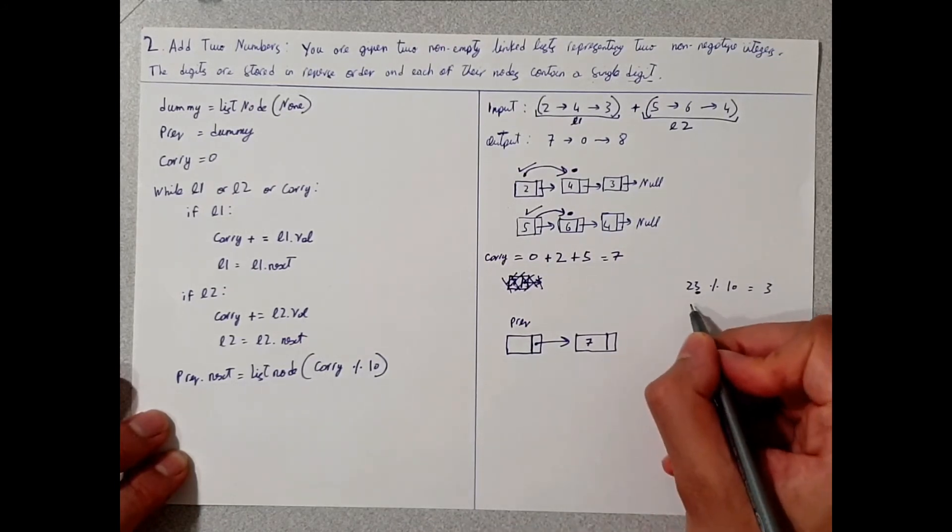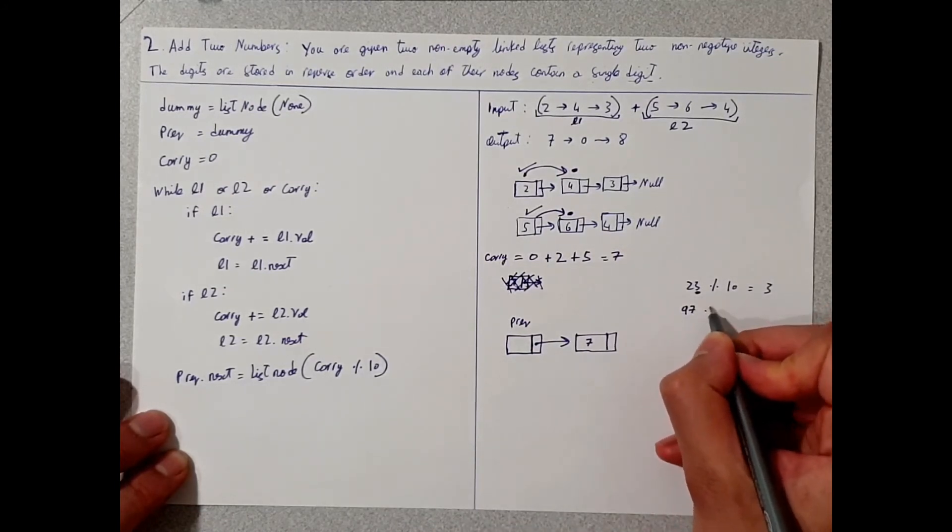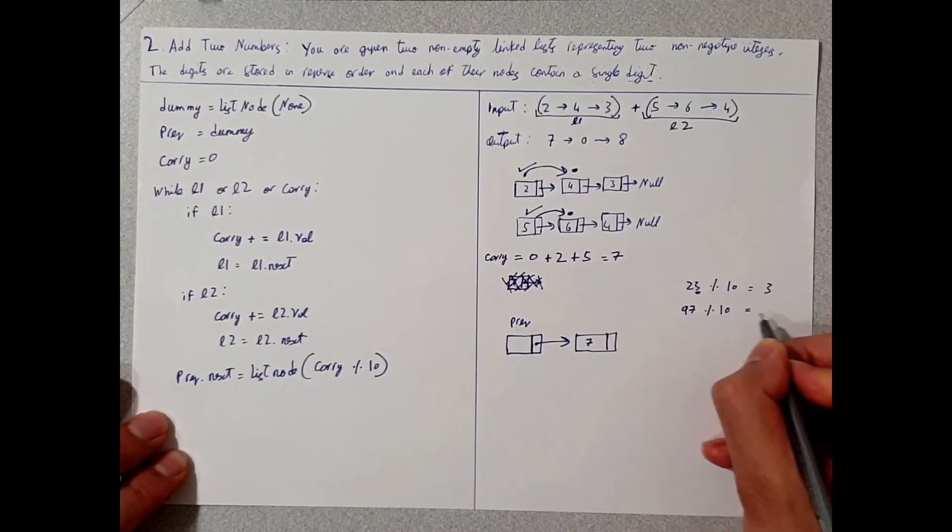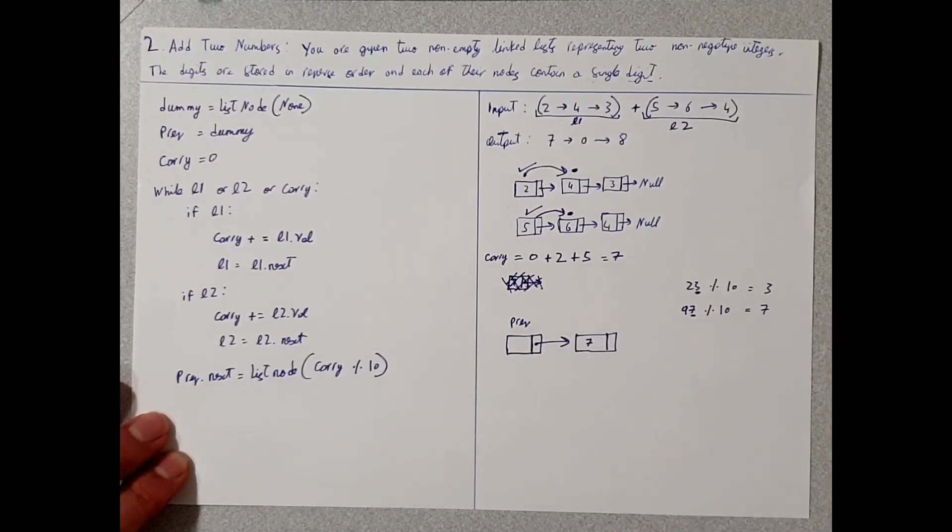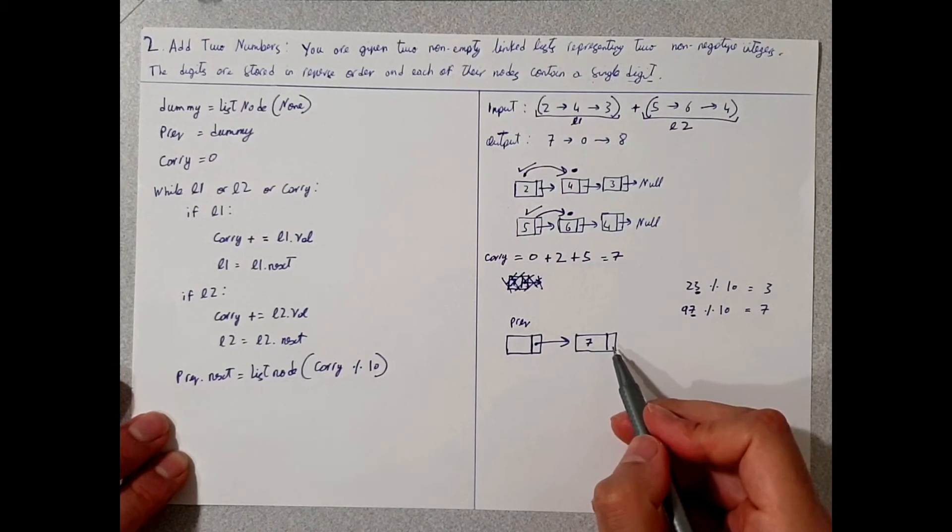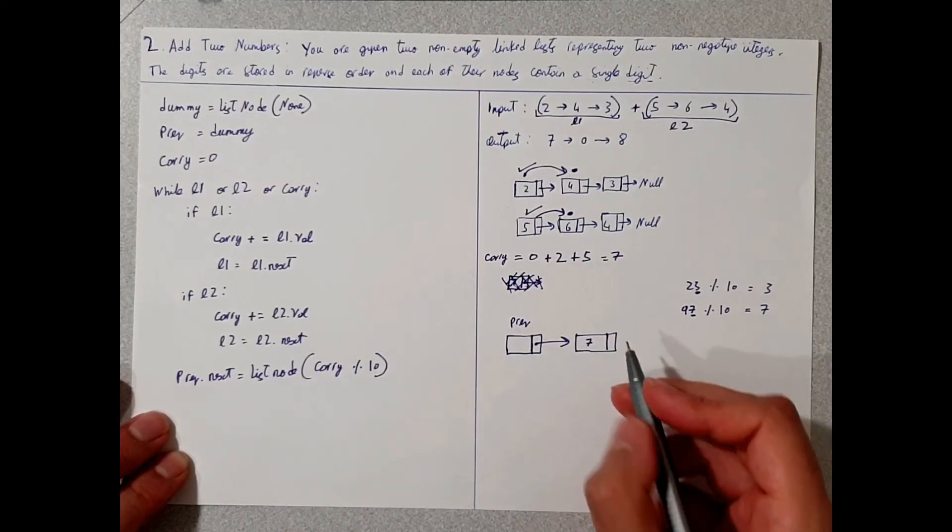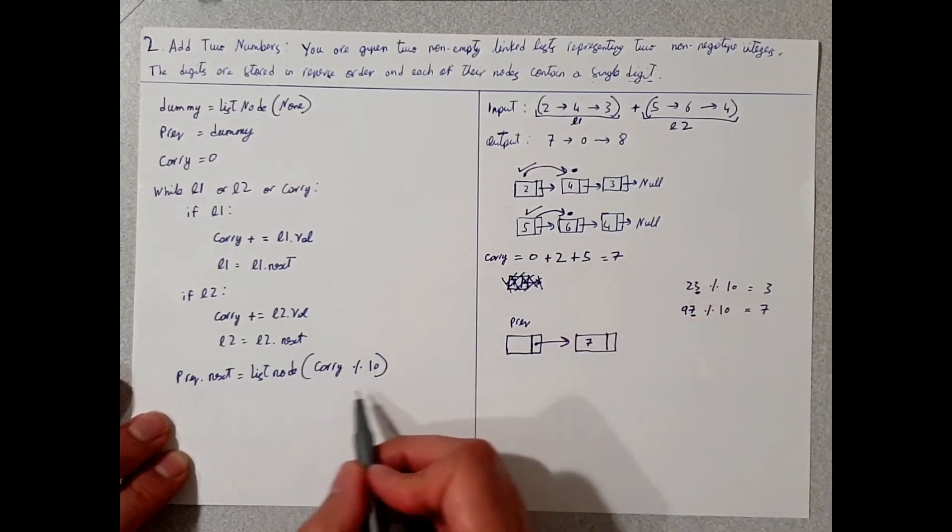So let's say we had 23, the modulus of 23, 10 is three, so which is the remainder. Let's take another example. The modulus of 97, 27 is 7, which is right here. So any number, it's the last value, which is basically the remainder.